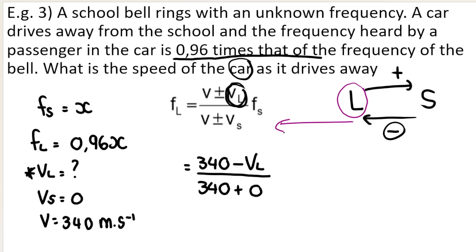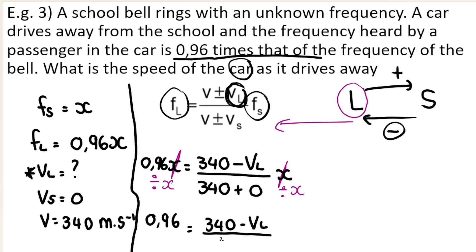Now, frequency of the source is X. Frequency of the listener is 0.96X. All that you need to do from this point onwards is good maths. Good mathematics. Because what happens is, because we have X on both sides of the equation, it's an equation. So I can divide both sides by X. Remember, it's an equation. What I do to the one side, I must do to the other side. So I'm dividing both sides by X. So the X's technically cancel out. So what you have is you have 0.96. And on this side, you have 340 minus VL over, what is 340 plus zero? Just 340. And you continue solving from there.